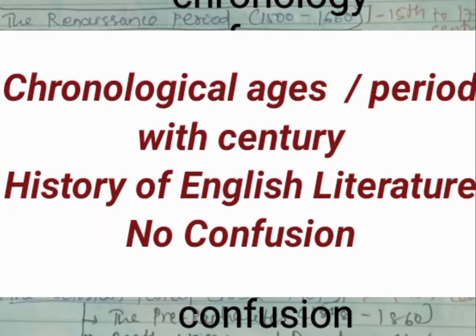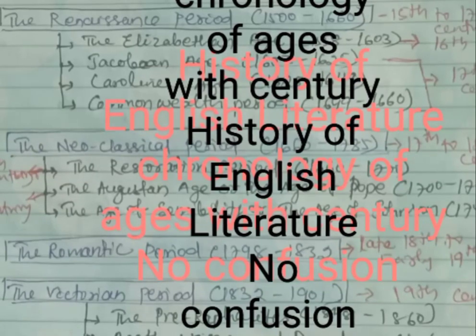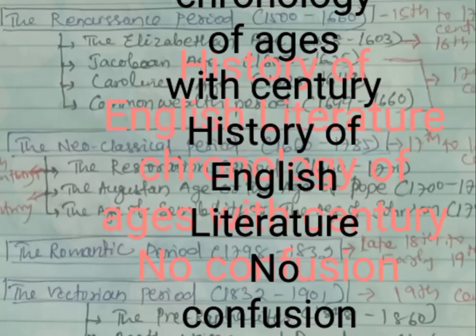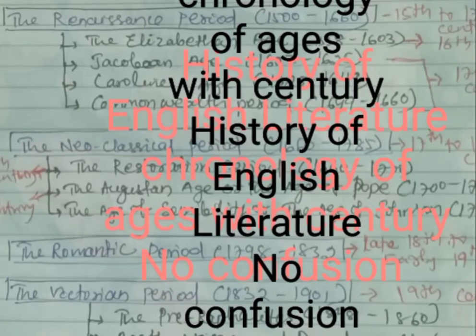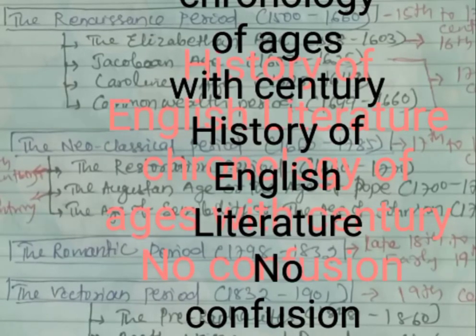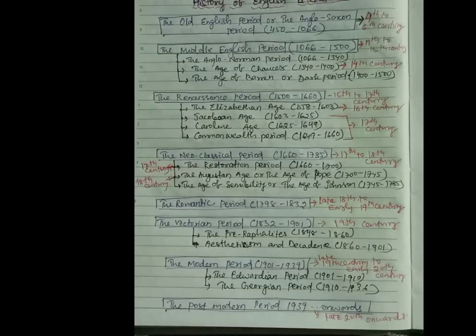Welcome to my channel. This is a class on chronological ages or periods of history of English literature with ages, with century. Which period or which age refers to which century, I have clarified here. In this class you will know better. This is the chronological order.